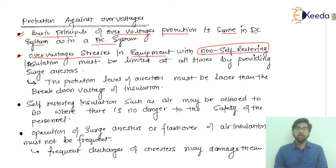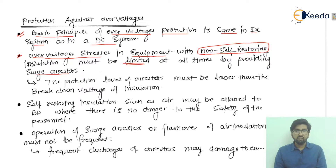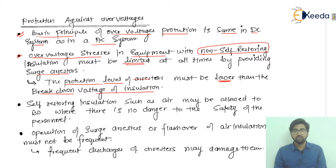These stresses must be limited at all times by providing surge arrestors. The protection level of the arrestors must be lower than the breakdown voltage of the insulation.